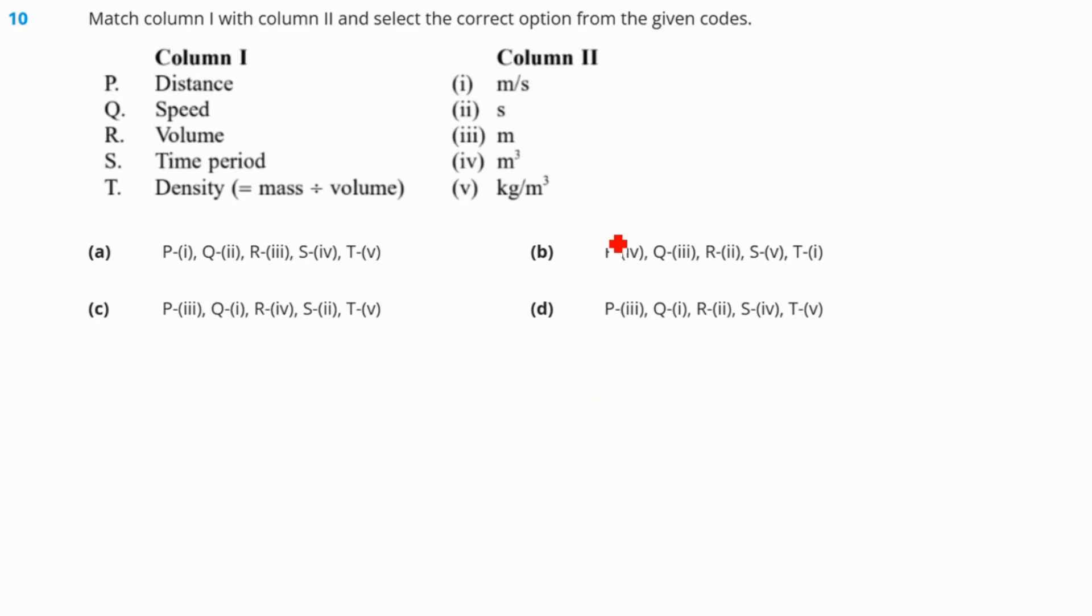Question number 10. Match column 1 with column 2 and select the correct option from the given codes. Distance is measured in mostly meter. So this is P. Speed is measured in meter per second because speed is equal to distance by time. So this is Q. Volume is measured in meter cube. This is R. Time period is always measured in seconds. That is the standard unit. So this is S. Density is measured in kg per meter cube. That is mass by volume. So this will be T. So our correct answer is option number C.